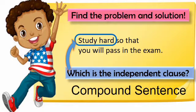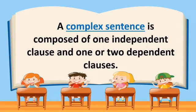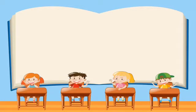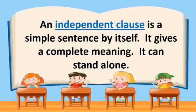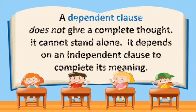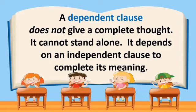It may be a small clause, but it has a complete thought. The subject is you. A complex sentence is composed of one independent clause and one or two dependent clauses. An independent clause is a simple sentence by itself — it gives a complete meaning. A dependent clause does not give a complete thought. It cannot stand alone. It depends on an independent clause to complete its meaning.